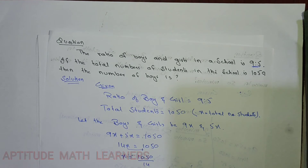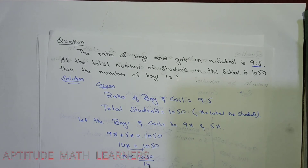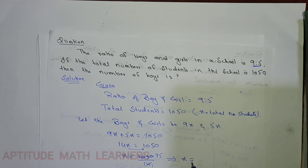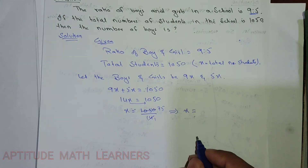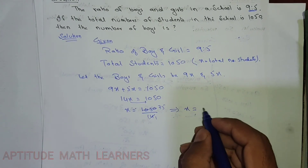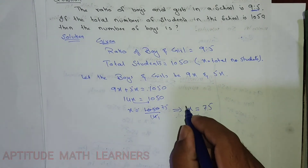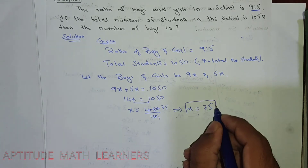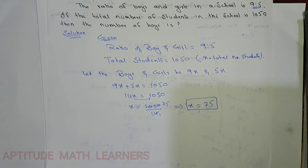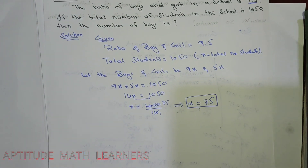So 14x equals 1050, therefore x equals 1050 divided by 14. Solving further, 14 goes into 1050 seventy-five times, so we get x equals 75.